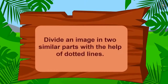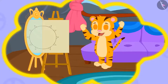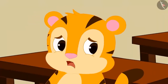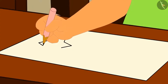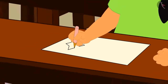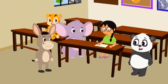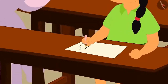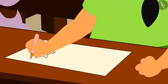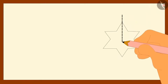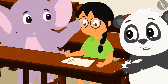In this video we will learn to divide an image into two similar parts with the help of dotted lines. Shere Khan became very popular because of his magical mirror, but one day he noticed a huge crowd around Minu in the classroom. 'Look, I will draw a dotted line on the image and it will divide the image into similar parts,' Minu tells the children, holding an image of a star. She draws a line on the image.